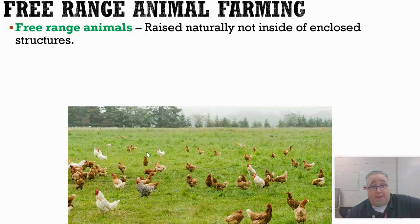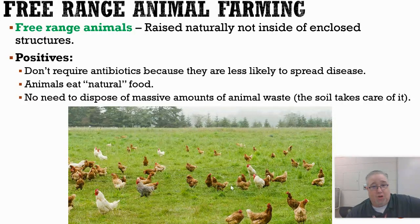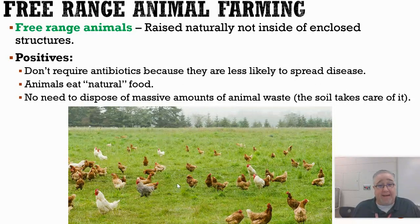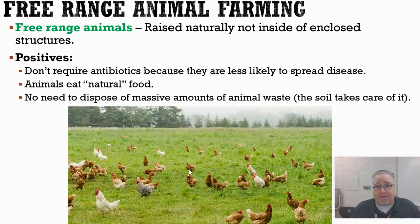The other way to raise animals is free-range farming. Look at how happy these chickens are — they're not packed in a cage or crammed together. Free-range animals are less likely to spread diseases, so we don't need as many antibiotics. They tend to eat natural foods and live off the land, so we're not pumping them full of growth hormones. Waste is handled more naturally, broken down by soil bacteria, so there's much less of a waste management issue.